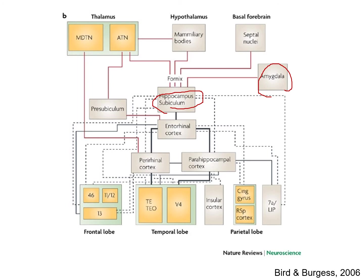Of course, the amygdala modulates the intensity of memory, especially for autobiographical memories and emotionally intense episodic memories. When it comes to emotional processing, much of that is governed by amygdala-centered structures. The amygdala projects to many places, which we'll discuss further.